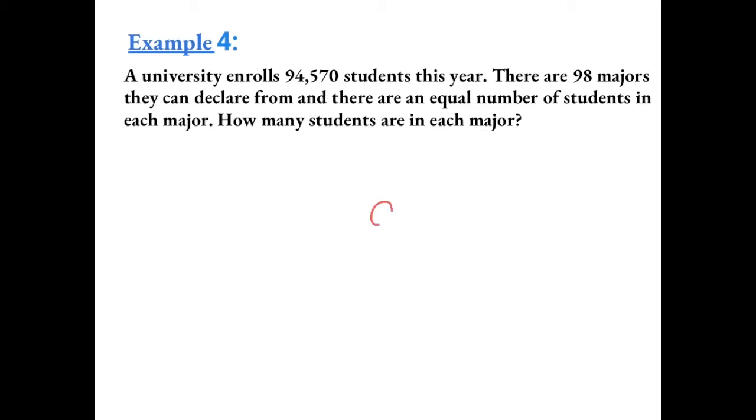So if there are 94,570 students, then we need to divide that by the 98 majors that they can choose from to see how many students are in each major. So 98 can't go into 9. It can't go into 94. So we have to see how many times it goes into 945. So 98 goes into 945 nine times. 9 times 98 gives us 882.